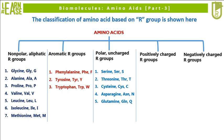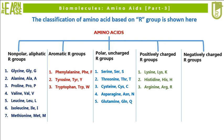Serine, threonine, cysteine, asparagine, and glutamine are categorized under amino acids with polar uncharged R groups. Lysine, histidine, and arginine are categorized under amino acids with positively charged R groups. Aspartate and glutamate are categorized under amino acids with negatively charged R groups.